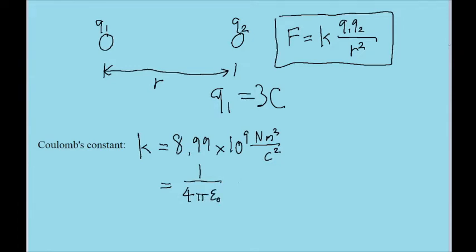You might sometimes see the K be written as 1 over 4 times pi times epsilon naught. This is partly for historical reasons, but also partly because this form simplifies equations that we'll see when we get into later topics, like electric fields and Gauss's law.